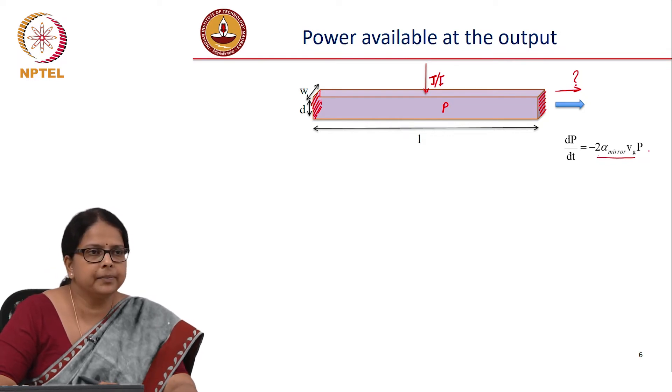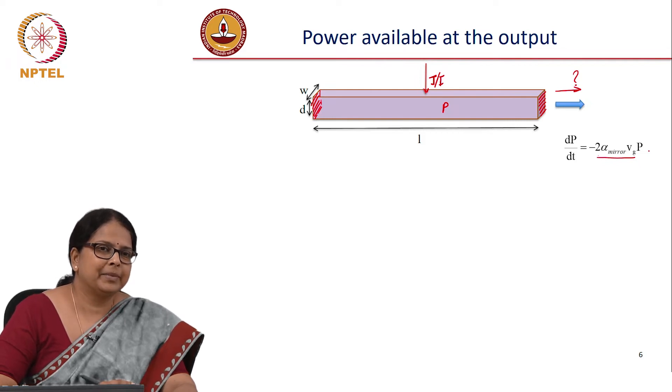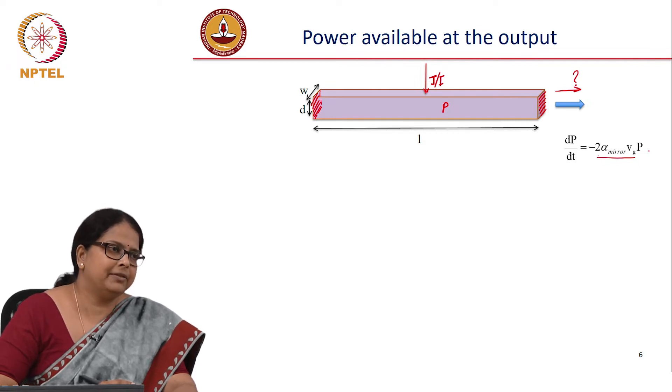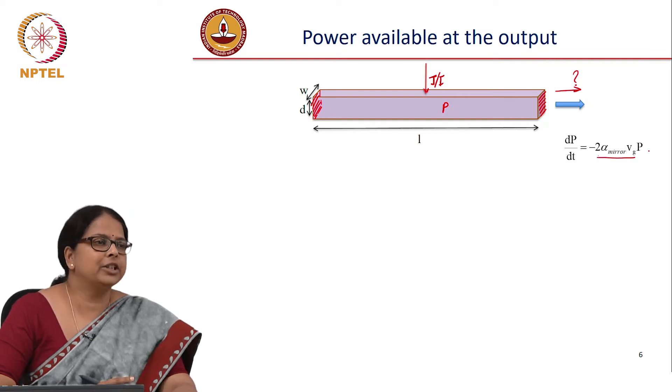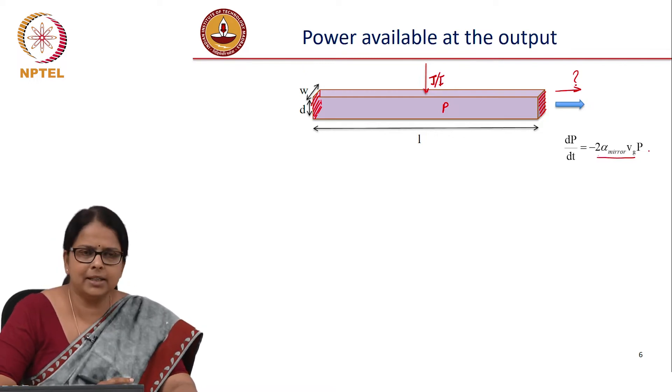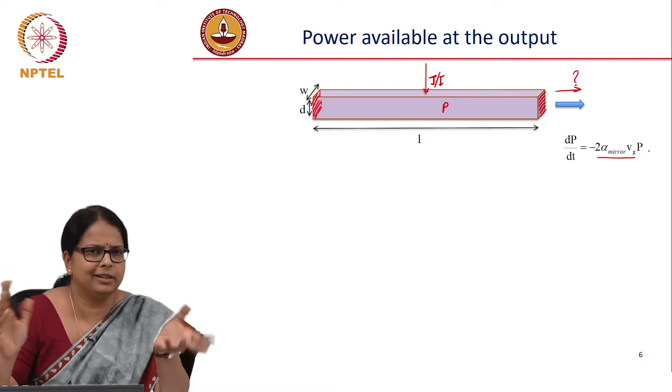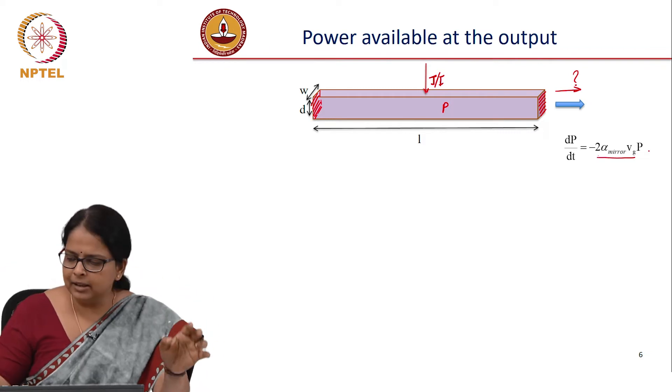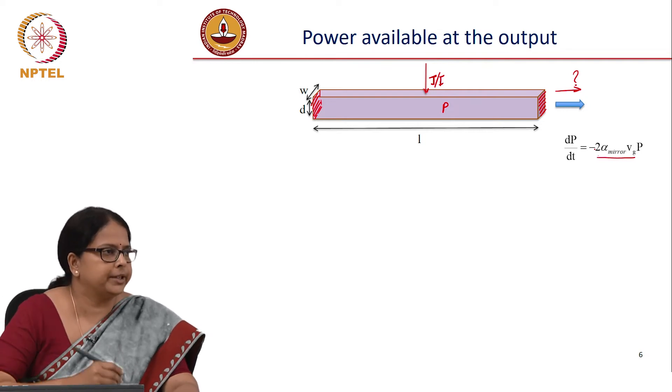2α mirror because α is—not because there are 2 mirrors. This we discussed last time. Power, we are talking about power. The attenuation coefficient or attenuation constant in field is α. So when it becomes power, it becomes 2α. We have already considered the fact that there are 2 mirrors because this α mirror had R1, R2, and 2D. So this 2 comes not because of the fact that there are 2 mirrors, but because it is a power equation we are writing.